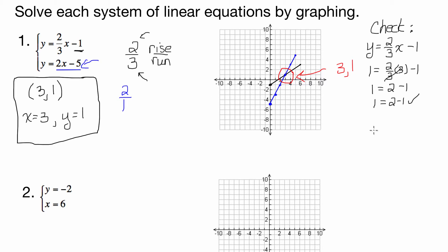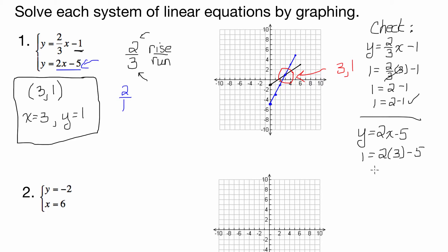Let's check it in the other one: y equals 2x minus 5. We want to know, is it true that 1 equals 2 times 3 minus 5? That's 1 equals 6 minus 5, and that is true — 1 equals 1. So the answer to this first one is (3, 1), or x equals 3, y equals 1.